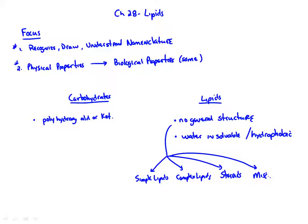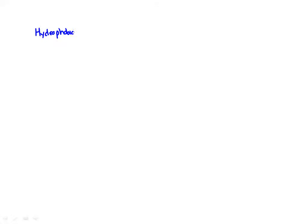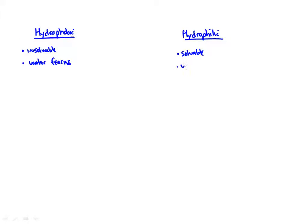So let's take a look at what makes something water insoluble. If we talk about hydrophobic versus hydrophilic: hydrophobic means they tend to be insoluble, while hydrophilic tends to mean soluble. Hydrophobic means water-fearing, and hydrophilic means water-loving — those are good ways to remember it.